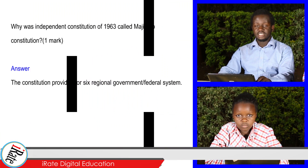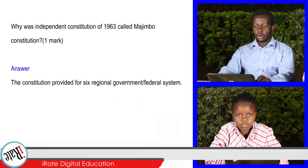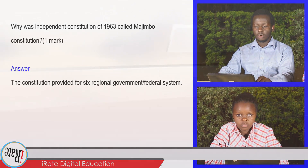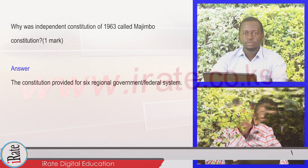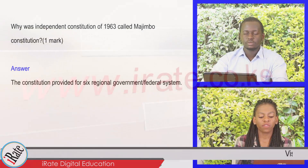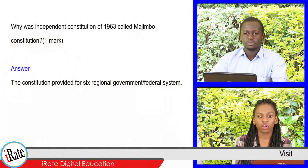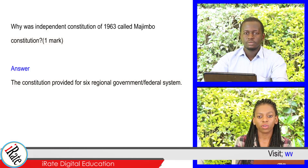The independent Constitution of 1963 was called the Majimbo Constitution. The Constitution provided for six regional governments, that is, a federal system.